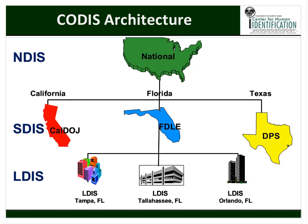Most of you are familiar with the convicted offender databases and arrestee databases — now over seven million individuals in the convicted offender database. There are several hundred thousand profiles from forensic crime scene samples. Only within the last five years have the missing persons databases in CODIS actually been utilized. There are three databases under the missing persons domain: profiles from unidentified human remains, direct reference samples from missing persons such as baby teeth, toothbrushes, or hairbrushes, and family reference samples — voluntarily contributed by loved ones seeking to identify missing family members.